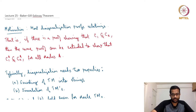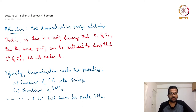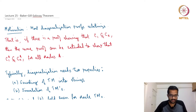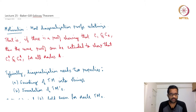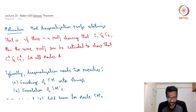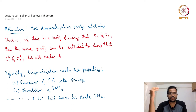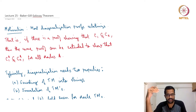Hello and welcome to lecture 25 of the course Computational Complexity. Today we are going to see an interesting theorem called the Baker-Gill-Soloway theorem. Baker, Gill and Soloway proved this in 1975. Let us first describe the motivation and then I will state the theorem.